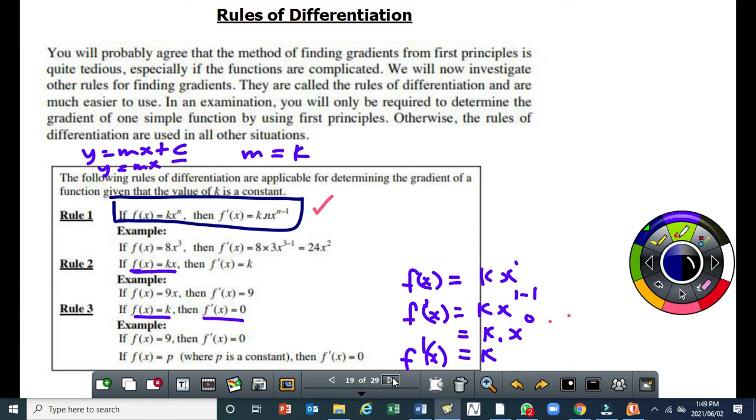Now the process of finding a derivative in calculus is called differentiation. This is a calculus term that you encounter if you do calculus. Differentiation is the process of finding the derivative. So when you find the derivative, we say that you have differentiated. The process or the act of finding a derivative is called differentiation.